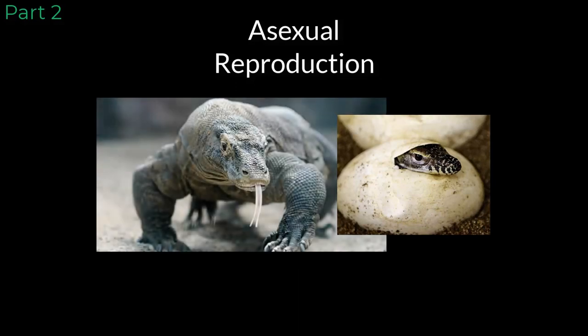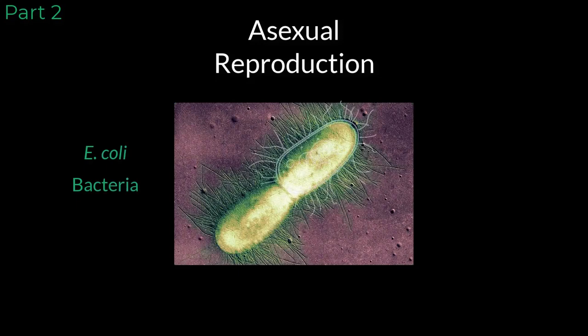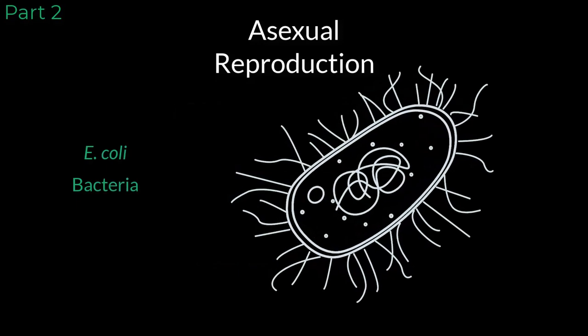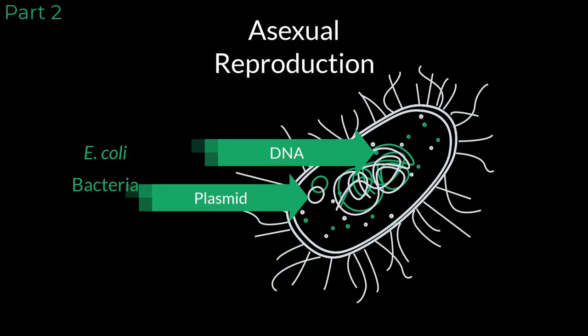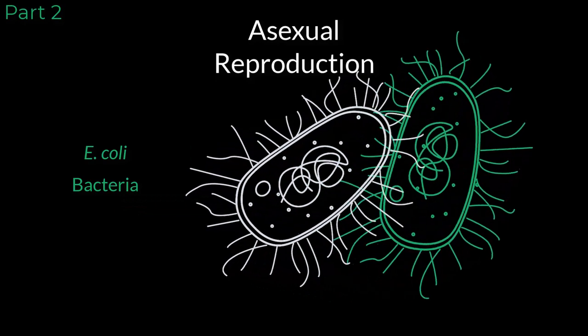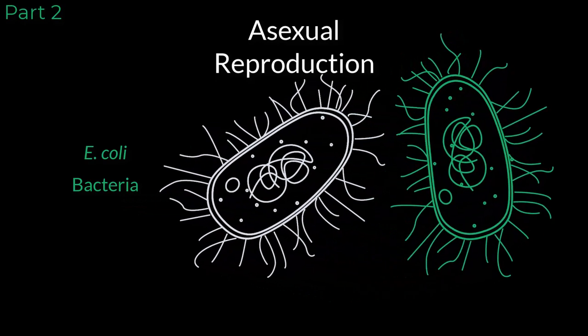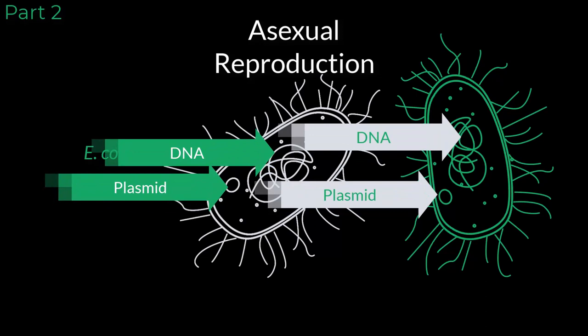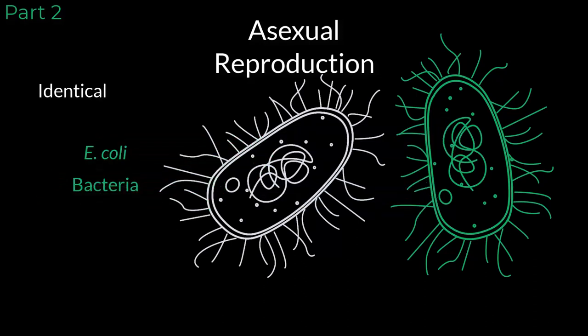Asexual reproduction is a bit different. Within this process, an offspring is created by a single parent. During asexual reproduction, only one parent passes on its genetic material, not two parents. A great example of this is seen with bacterial cells. When a bacterial cell goes to reproduce, it replicates its genetic material, or DNA, making an exact copy. From there, the cell splits into two, with each new cell receiving one copy of the replicated DNA. This makes an offspring that is identical to the original parent cell. The identical cells are called clones.